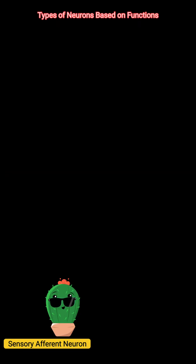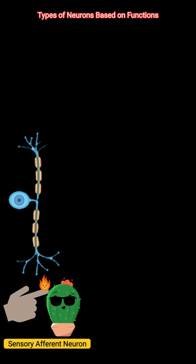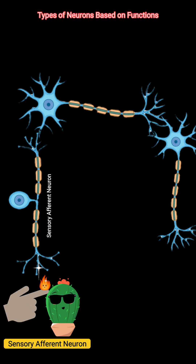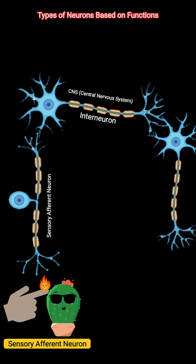Types of neurons based on function: Sensory, or afferent, neurons carry signals from receptors to the CNS. Examples include touch, pain, and temperature. Interneurons, also called association neurons, are located inside the CNS and connect sensory and motor neurons. They are responsible for processing, thinking, and memory, and are the most abundant type.